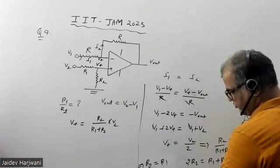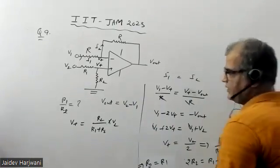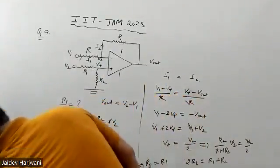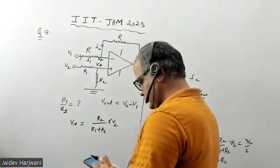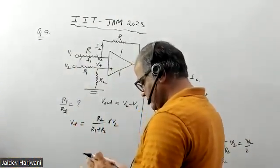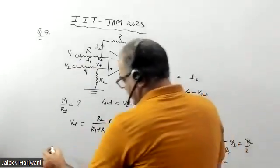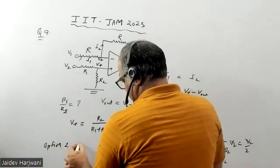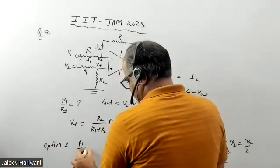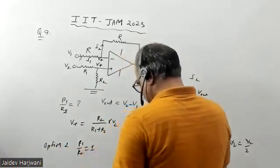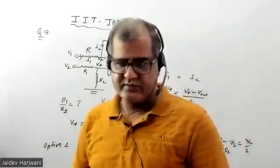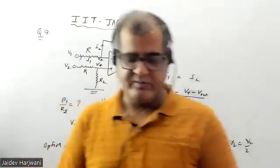They are asking the ratio of R1 by R2, so the ratio R1 by R2 will be 1. This is given as option 2. R1 equals R2, the ratio is equal to 1, so this is your correct answer for this question. Thank you very much.